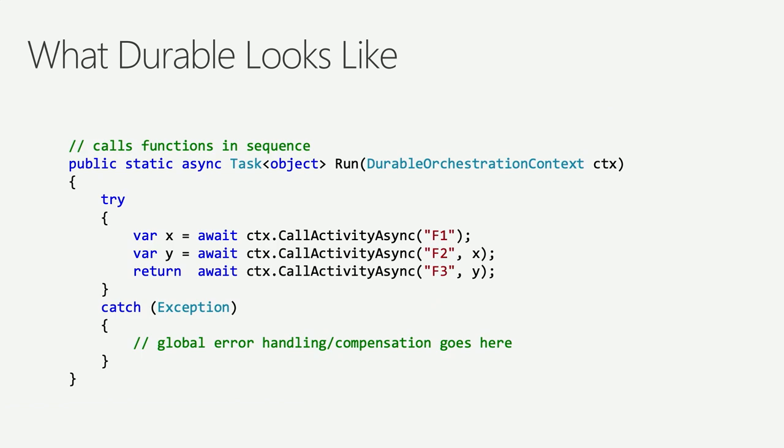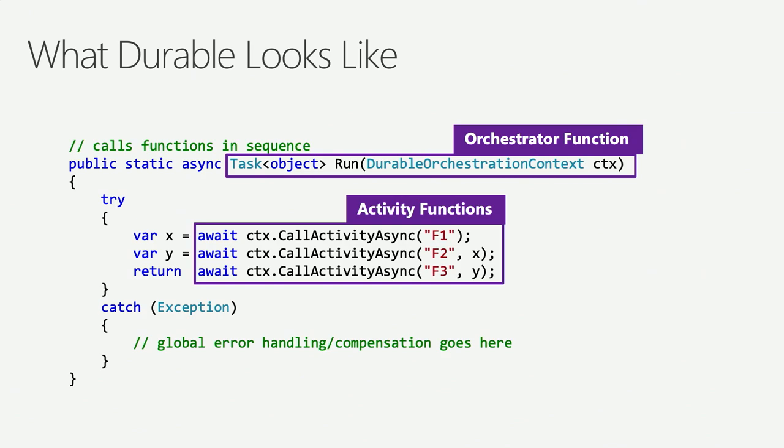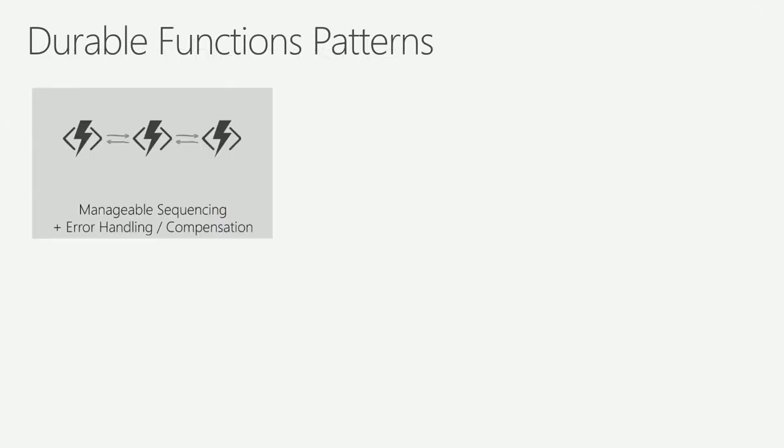As I mentioned, I'm going to be durable — I'm going to make it through this. So what are some of the patterns you can do with durable functions? The one I spent time on last year was orchestration: I have my orchestrator function calling into my activity functions — other functions in the same app — and I can chain them together.